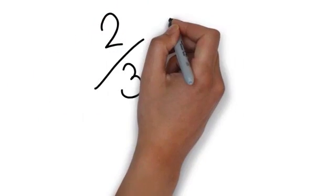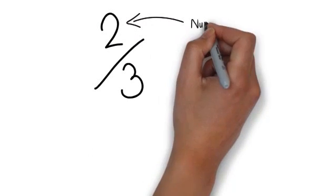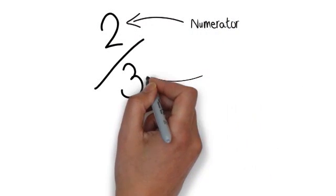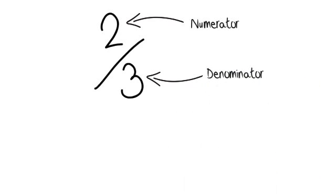So the structure of fractions. If we work with this example here, two-thirds, the two is referred to as the numerator and the three is referred to as the denominator.